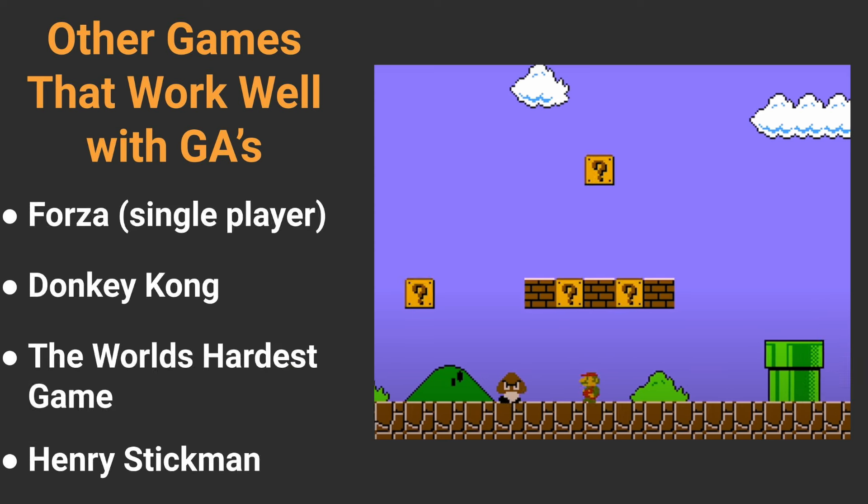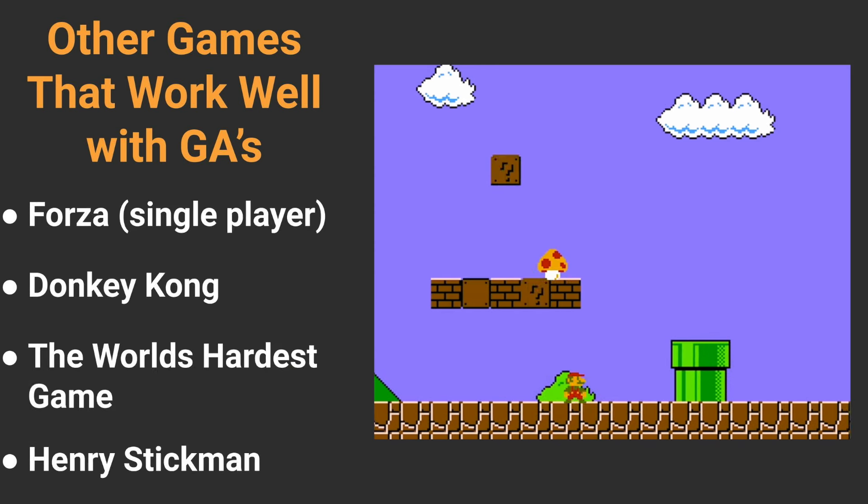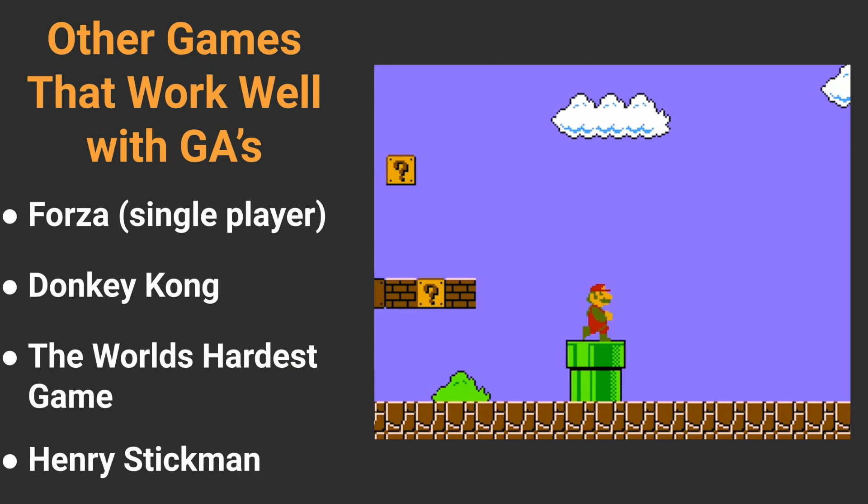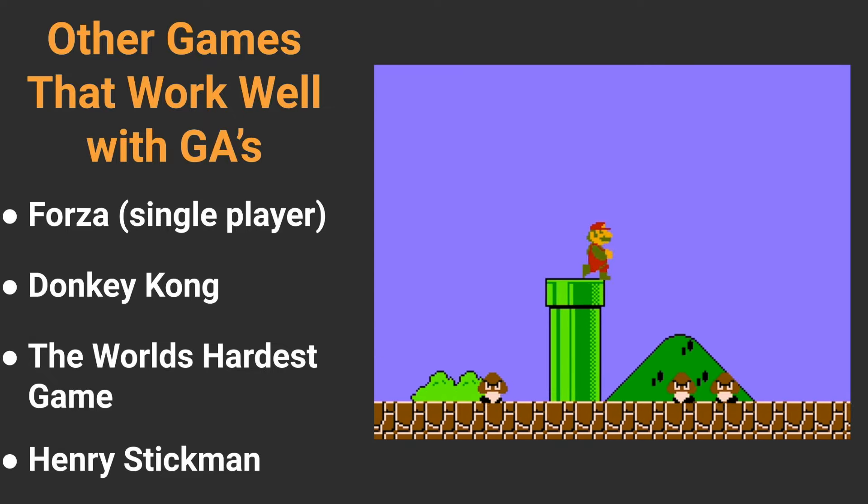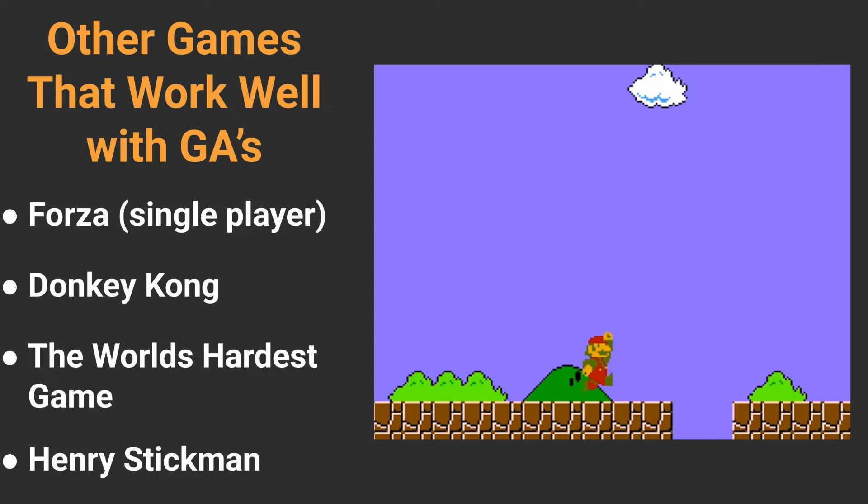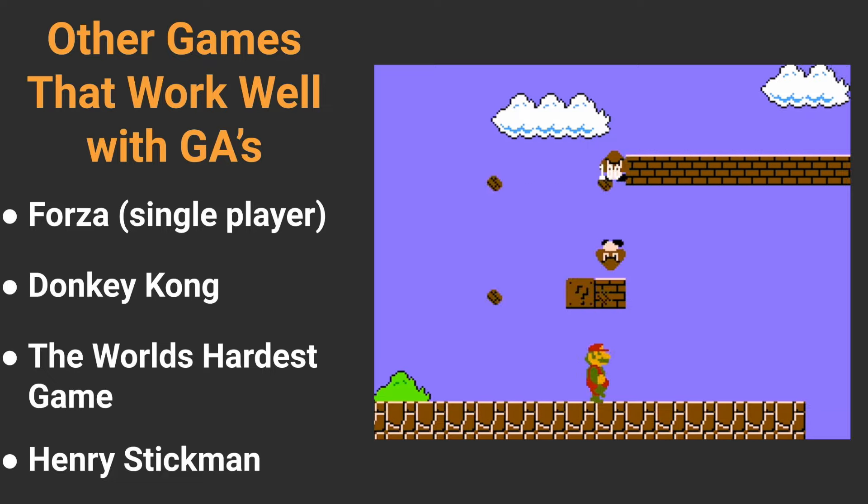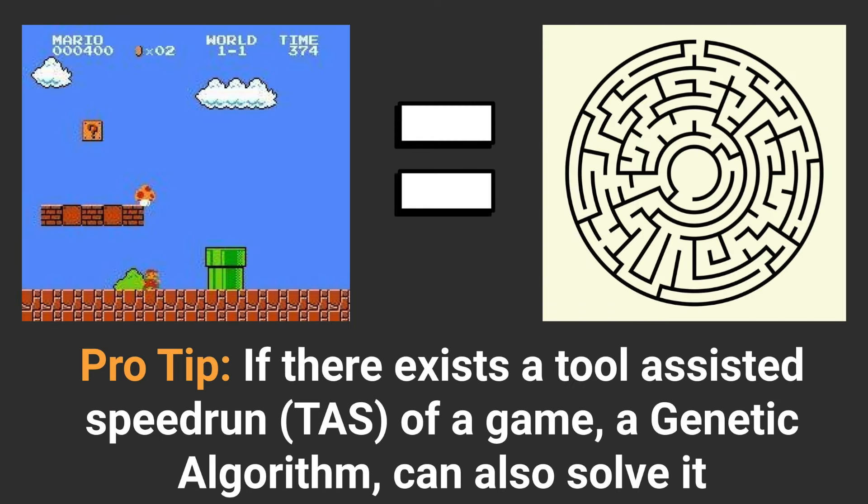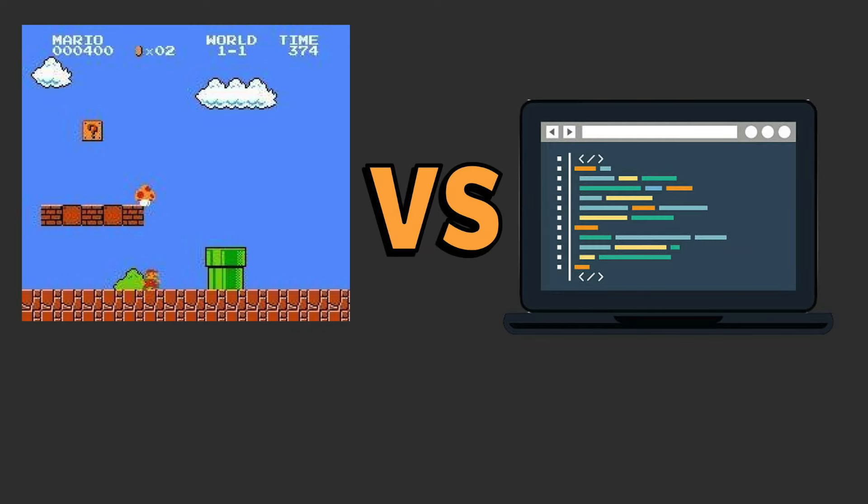For a game like Mario, where the enemies are always in the same place at the same time, a genetic algorithm can create a map of moves to best complete the game. Think of this almost like a maze for the AI to solve. The game will always be repeatable, so there is no reason to learn strategies, but rather what inputs at what frame achieve your goals best.